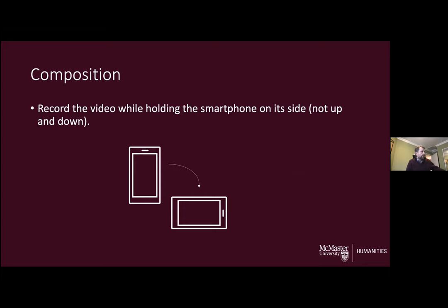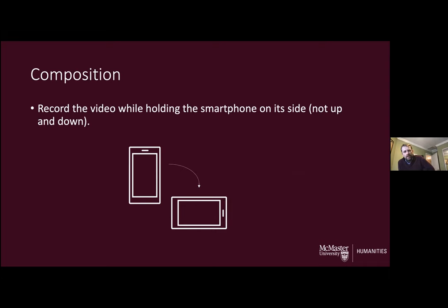Now I want to talk about composition. If your intended audience is going to be viewing on a computer, laptop, or television, you really want to record with your smartphone on its side — landscape mode as opposed to portrait mode. That stretches your image out in a landscape style and makes it easier to see on those devices. Most platforms prefer that method. The exception is if you're doing a video intended for Instagram or TikTok, but by and large you probably want to record in landscape mode.